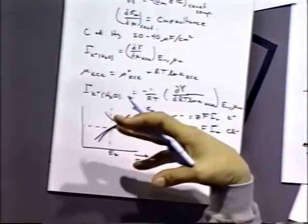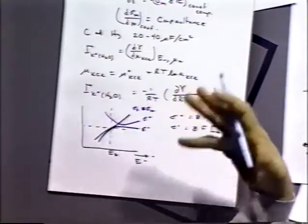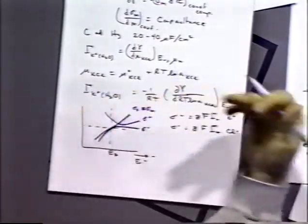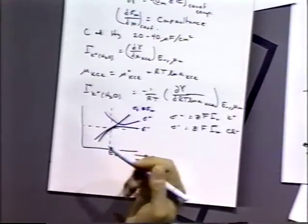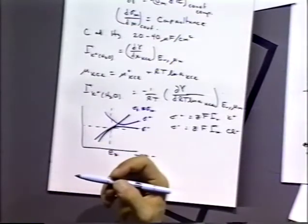So at a positively charged electrode, we expect a couple things to be true. Since it's positively charged, we expect anions to be attracted to the electrode and be absorbed to it. And in fact, that's what happens. You notice here that the excess amount of chloride ions is attracted to the electrode, and so the more positive we go, the more excess chloride we get.